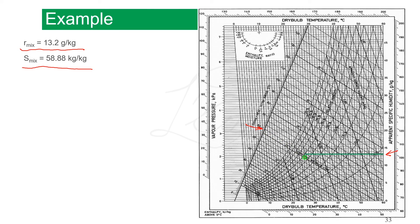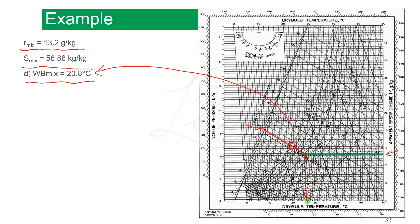This is the moisture content line and this is the sigma heat line. The intersection gives the state of the mixture. From there, the wet bulb temperature is 20.8 degrees. Drawing a line down to the dry bulb scale, the dry bulb temperature of the mixture is 26.2 degrees.